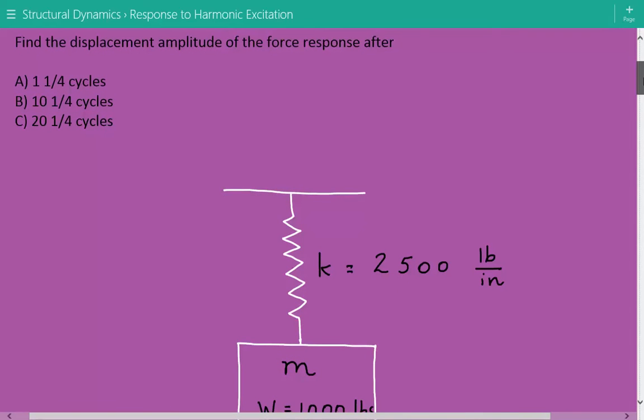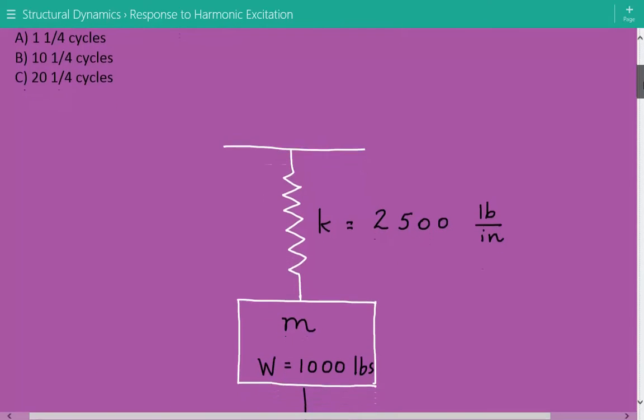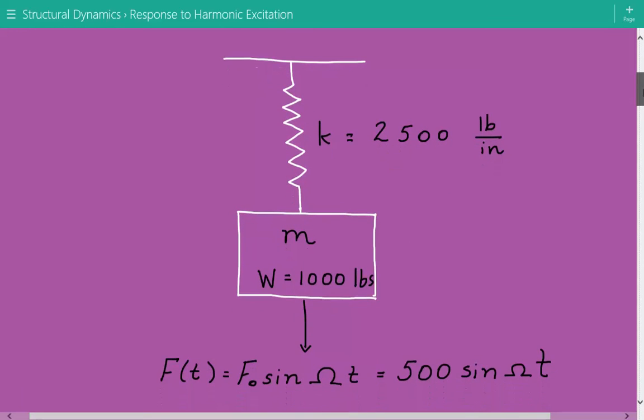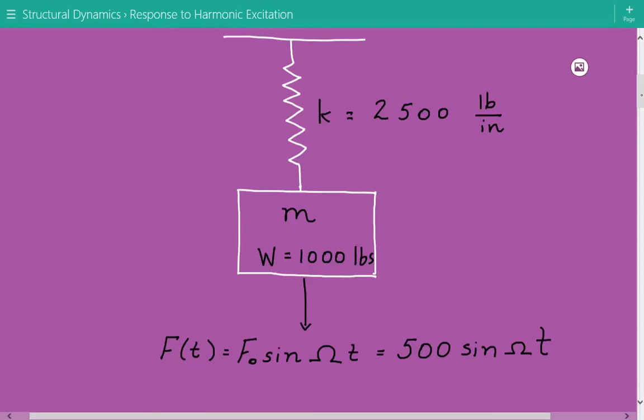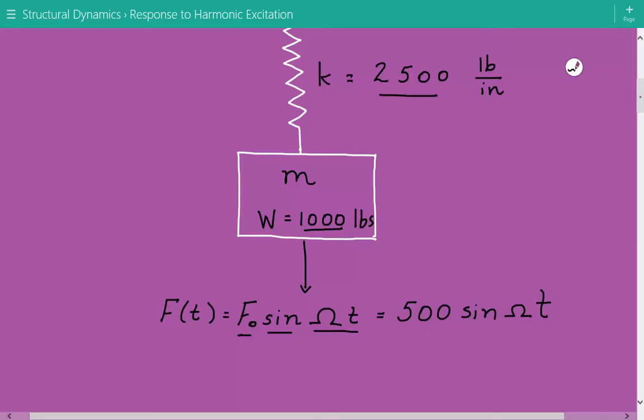So 1.25 cycles, 10.25, and 20.25 cycles. Here's our undamped spring mass system with spring stiffness equal to 2,500 pounds per inch and mass weight equal to 1,000 pounds. It's excited by some type of harmonic force. This harmonic force can be written as a mathematical function equal to the amplitude times sine of omega t. The amplitude of this harmonic force is 500, and omega is the excitation frequency.